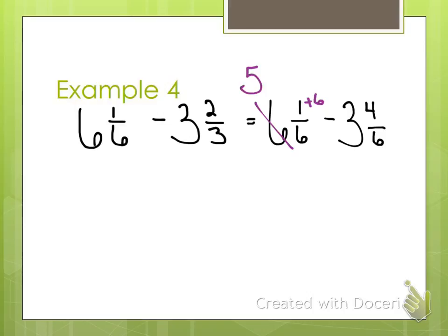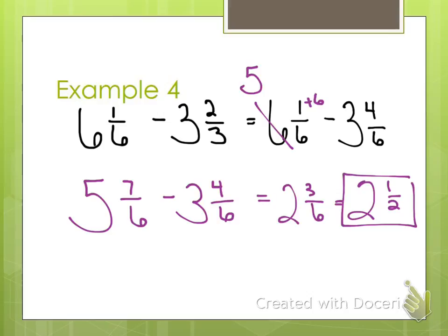Don't try to do this part mental math. I see kids making mistakes on this every year. So now I rewrite my fraction. 5 and 7 sixths minus 3 and 4 sixths. Now I can subtract my whole numbers and my numerators to get 2 and 3 sixths. And is that my final answer? 2 and a half.